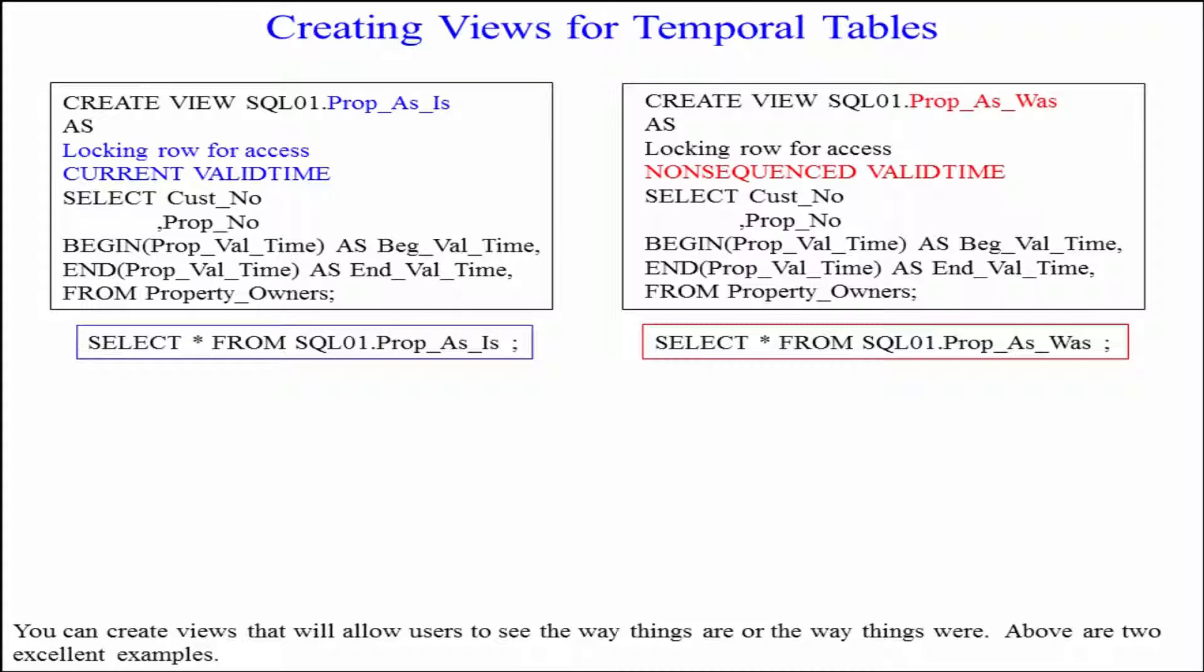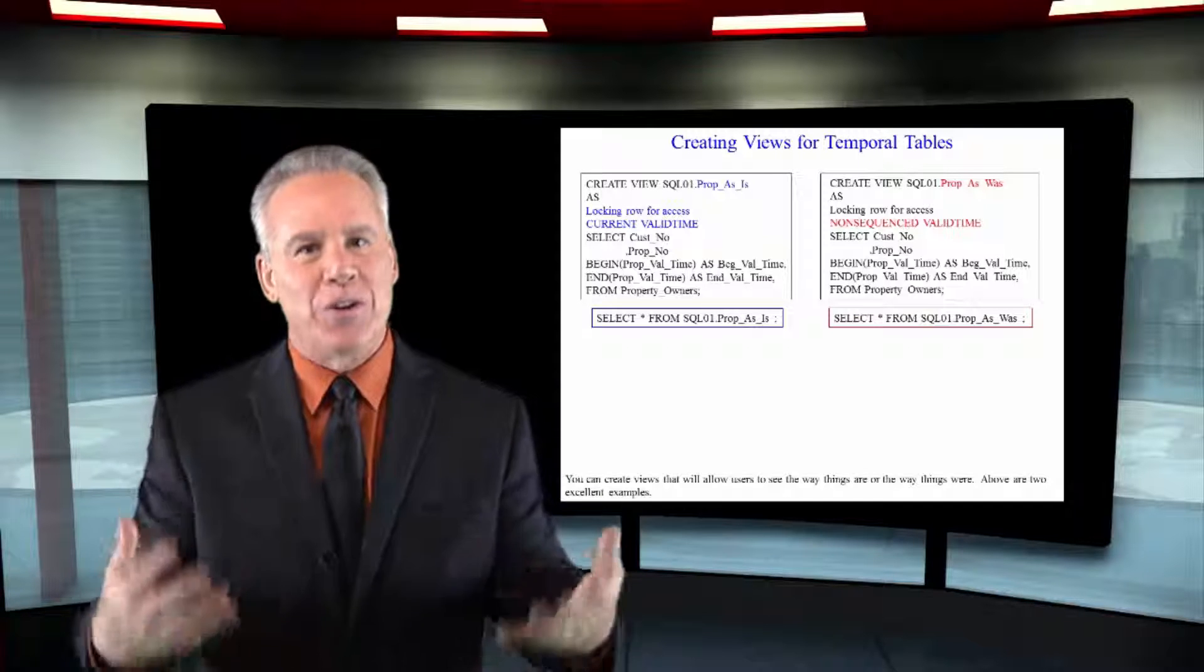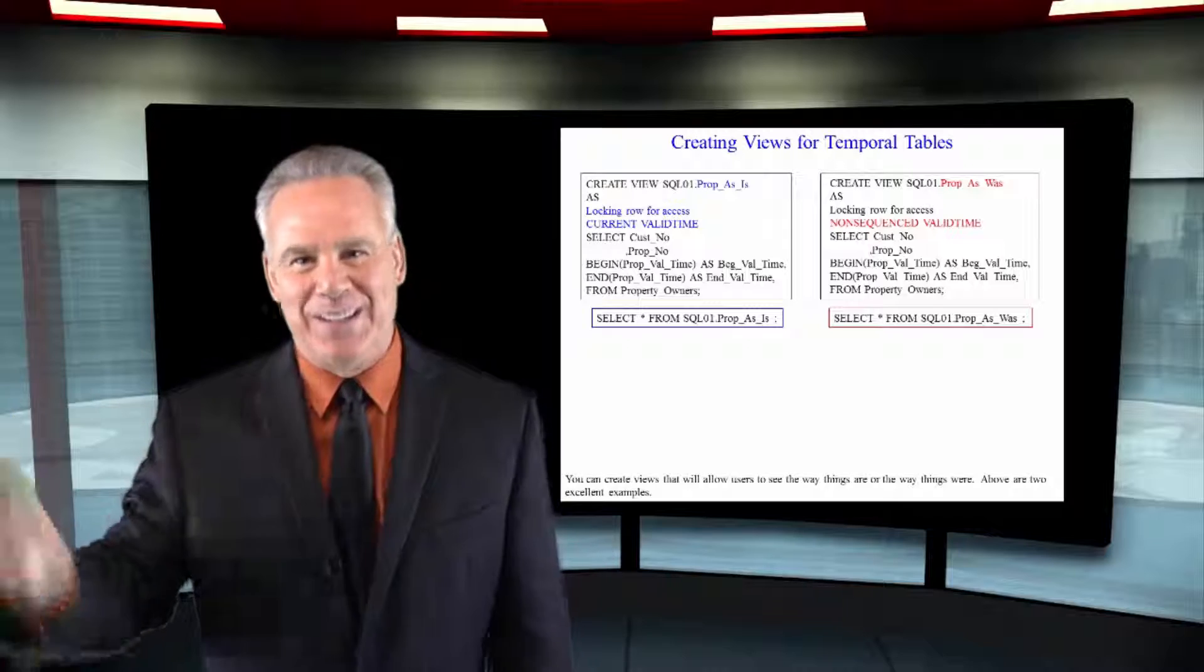In the second example, I say non-sequenced valid time. Shows me everything associated with that valid time. Creating views makes it much easier for the general user community to see certain things you want them to see.